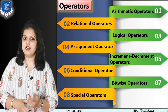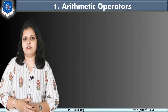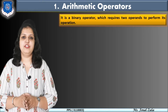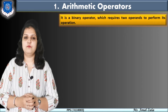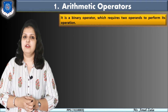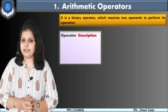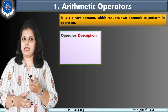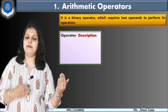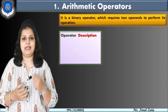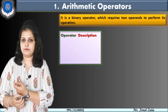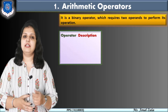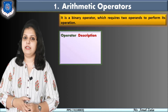Let's start with the very first operator, that is the arithmetic operator. It is a binary operator which requires two operands to perform any operation. Why is it called binary? Because when you want to do addition, for the plus sign you require a left and right side — two variables, like a plus b. That's why it is called binary.